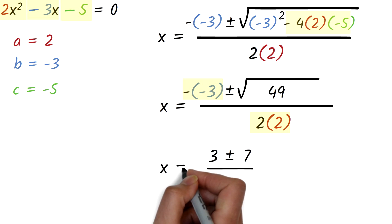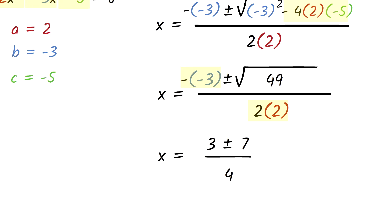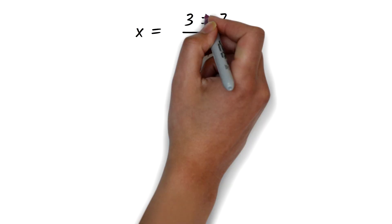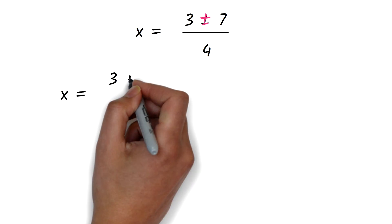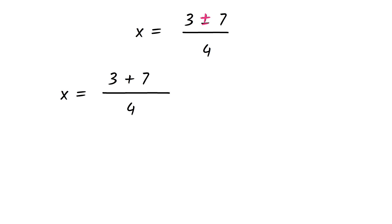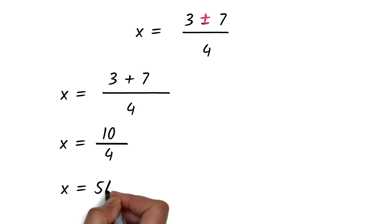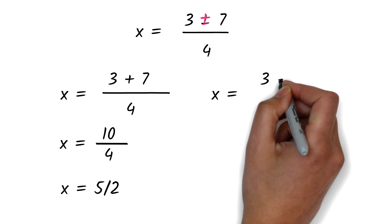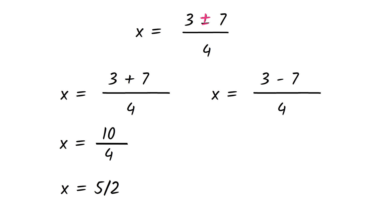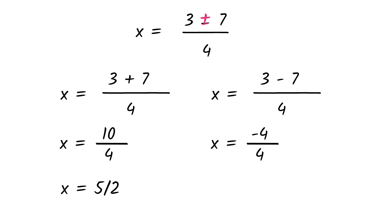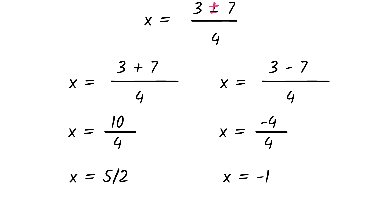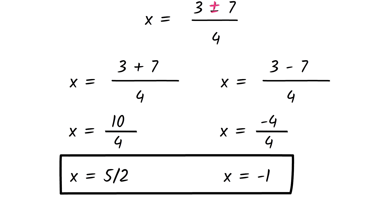So we now have x equals 3 plus or minus 7, all over 4. We have plus or minus, so we solve the plus part first. x equals 3 plus 7 over 4. 3 plus 7 is 10, so this is 10 divided by 4. We can reduce this to get x equals 5 over 2. Next, we solve the minus part. x equals 3 minus 7 over 4. 3 minus 7 is negative 4, so this is negative 4 divided by 4, giving us x equals negative 1. Our answer is x equals 5 over 2 or x equals negative 1.